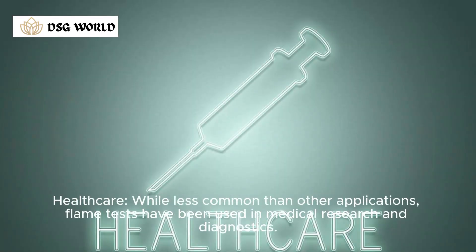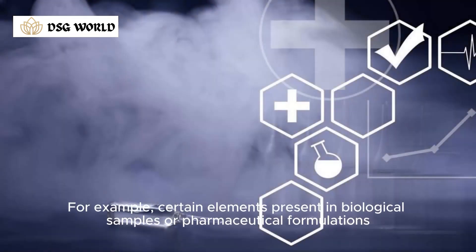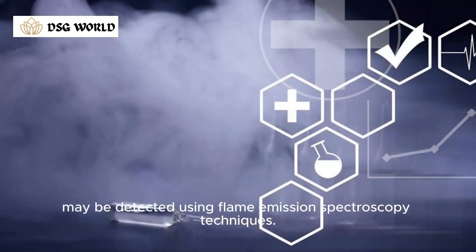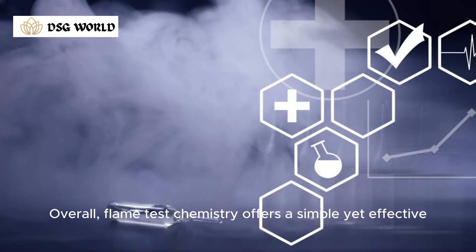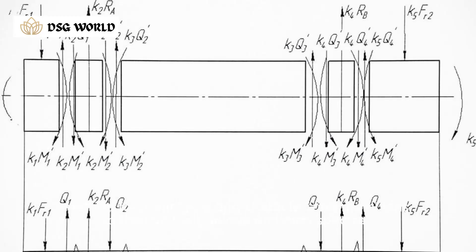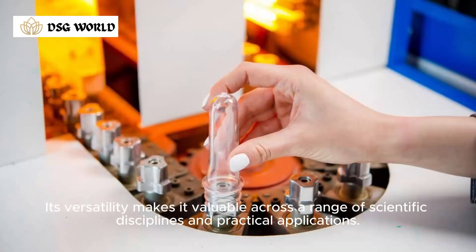Healthcare. While less common than other applications, flame tests have been used in medical research and diagnostics. For example, certain elements present in biological samples or pharmaceutical formulations may be detected using flame emission spectroscopy techniques. Overall, flame test chemistry offers a simple yet effective method for identifying and characterizing metal ions based on their unique emission spectra. Its versatility makes it valuable across a range of scientific disciplines and practical applications.